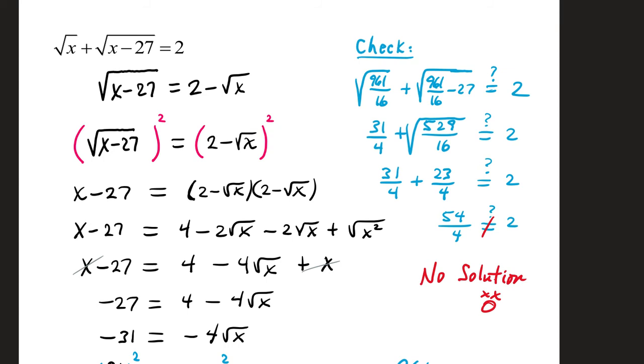Subtracting an x from both sides of the equation, those cancel. And that leaves us with negative 27 equals 4 minus 4 square root of x. Subtract 4 from both sides. We have negative 31 equals negative 4 square root of x. Divide both sides by negative 4, and that gives us 31 over 4 equals square root of x. And then to just get x, we're going to square both sides. 31 over 4 squares out to 961 over 16. So that's our candidate.